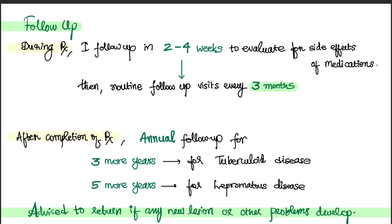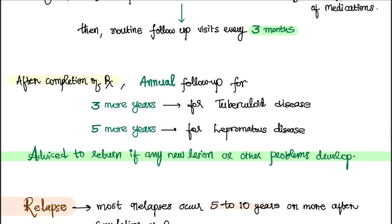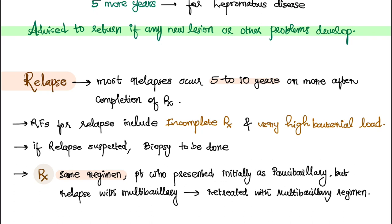Regarding follow-up during treatment, initially ask the patient to come within two to four weeks to evaluate for any side effects, then every three months. After completion of treatment — six months for paucibacillary or 12 months for multibacillary — annual follow-up is required. For tuberculoid disease, follow up for three more years; for lepromatous disease, follow up for five more years. Also ask patients to come if any new lesions or problems develop.